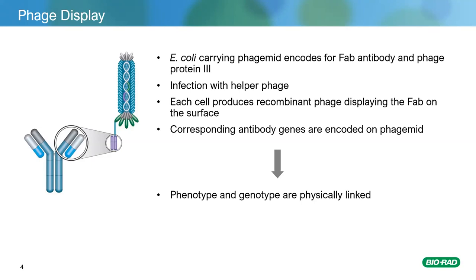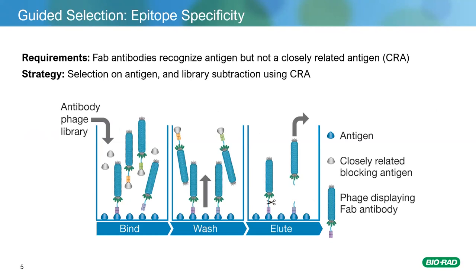After three enrichment rounds, we go from 45 billion down to a much smaller enriched library of tens of thousands of clones. We can then pick individual clones, sequence them, and have the DNA sequence of the antibody recognizing the customer's protein. Because it's an in vitro process, we can really manipulate the conditions of the library screen. One of the most popular strategies we use is the blocking strategy, or epitope specificity strategy.